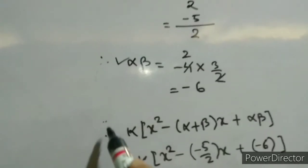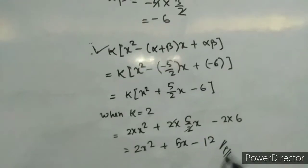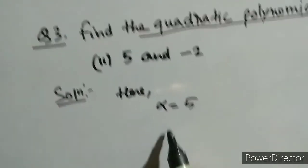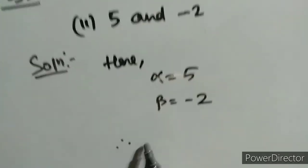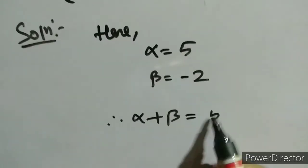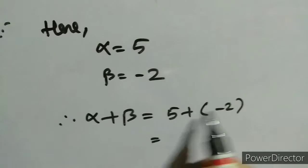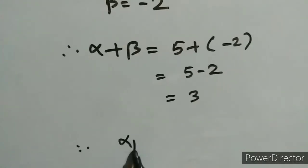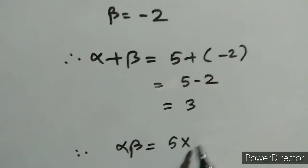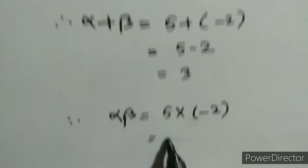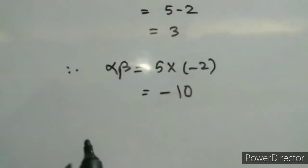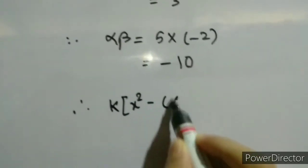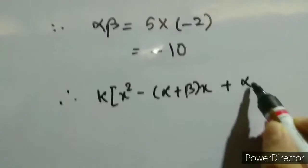For question 2, we use the same method. Here alpha equals 5 and beta equals minus 2. Therefore alpha plus beta equals 5 plus minus 2 equals 3. Then alpha times beta: alpha is 5 and beta is minus 2, so 5 times minus 2 equals minus 10. Now we apply the quadratic formula: k times (x squared minus (alpha plus beta) times x plus alpha times beta).